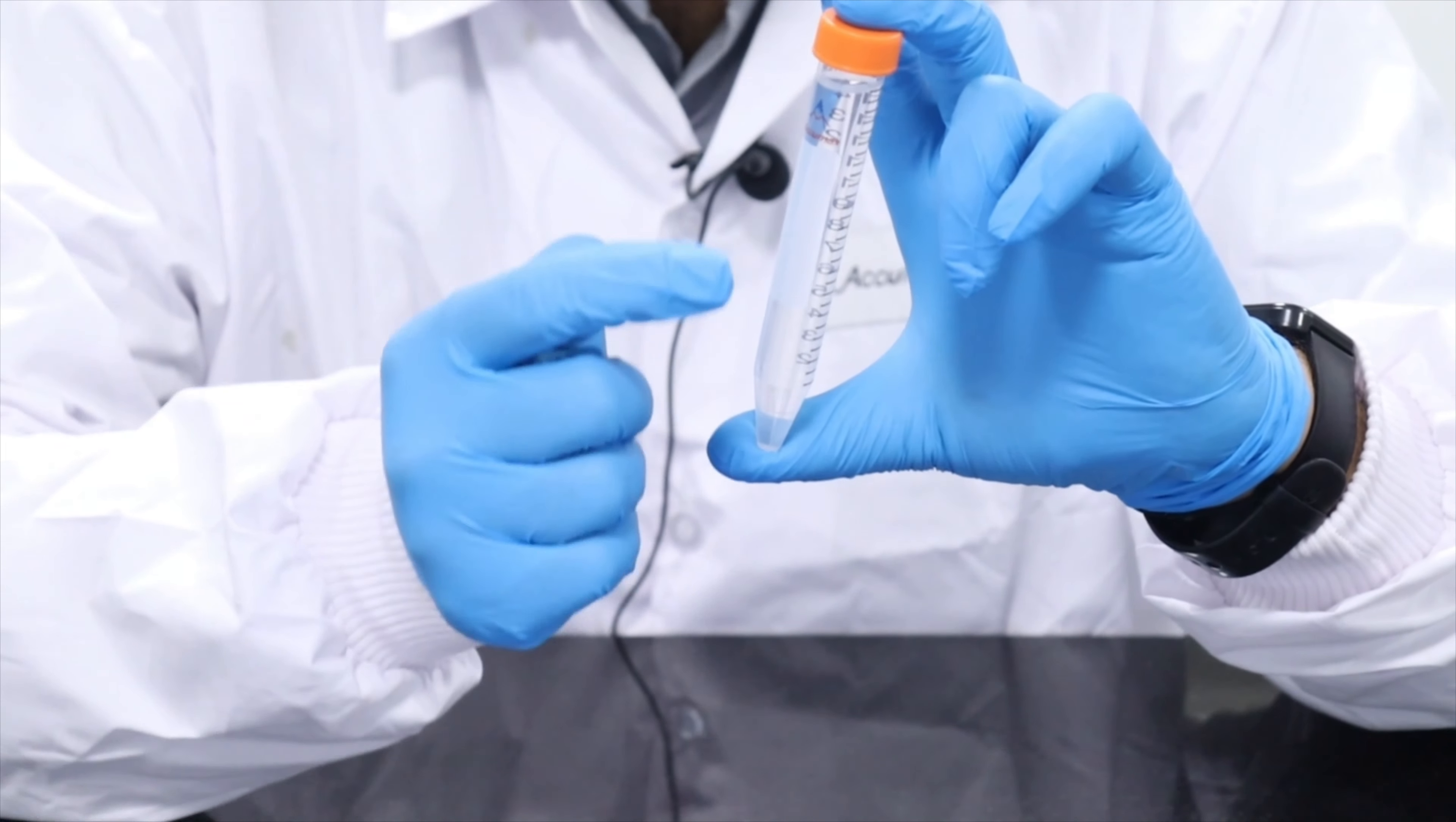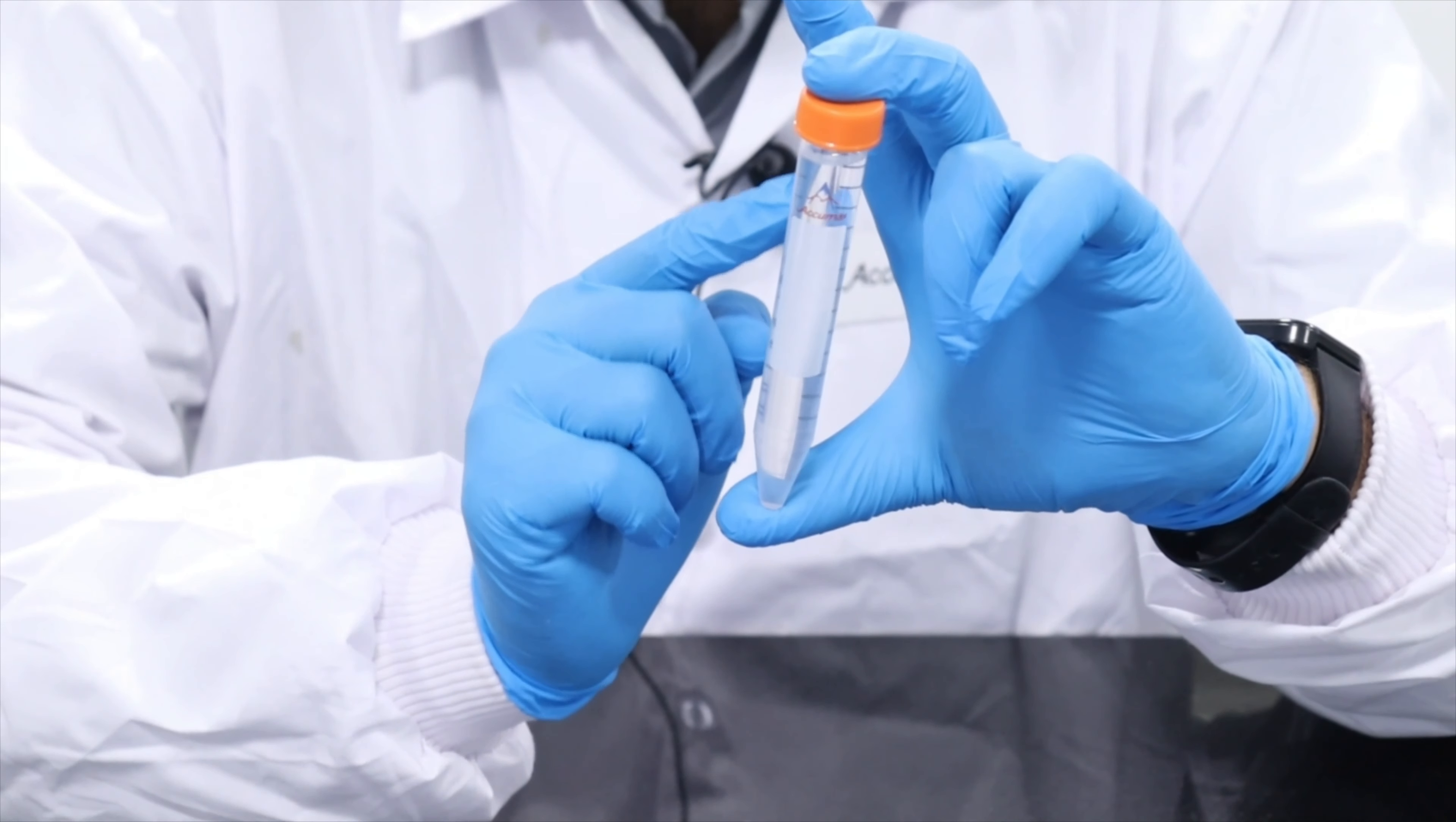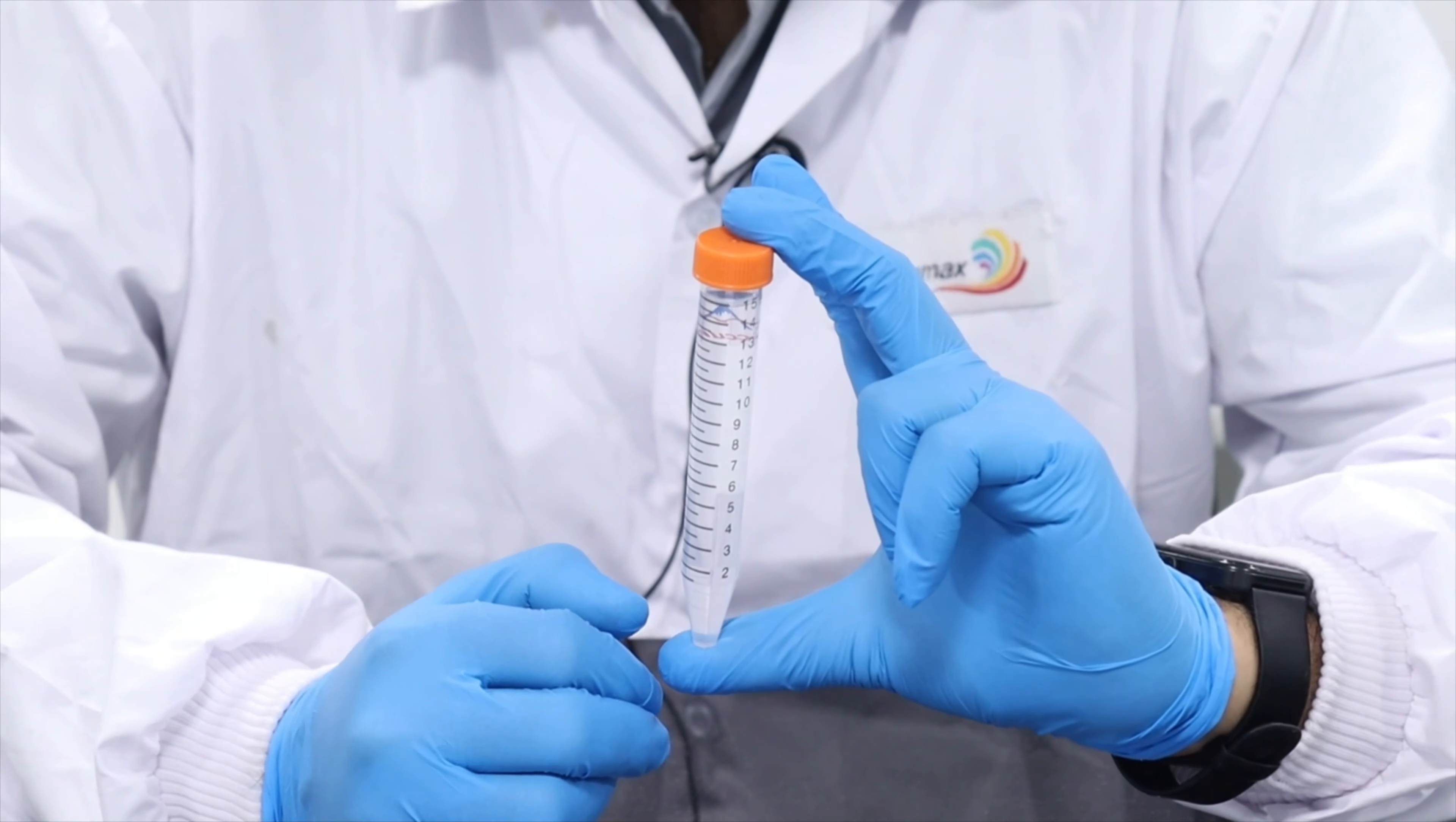The most important point of a centrifuge tube is a leak-proof design. If you see, even if there's liquid inside the centrifuge tube, even if I move it or rotate it inversely, when I open the cap there should be no liquid around the threads.